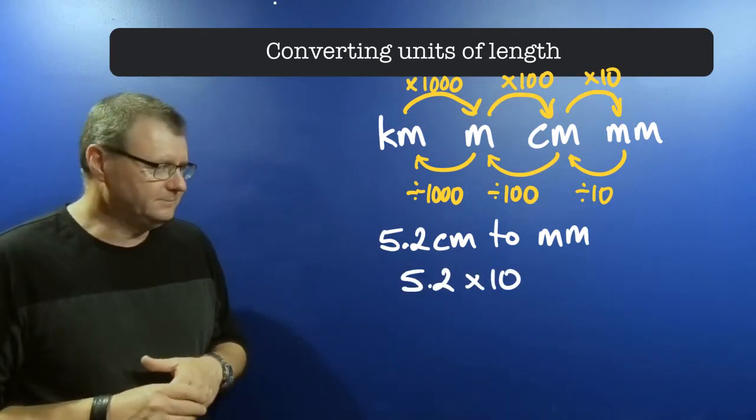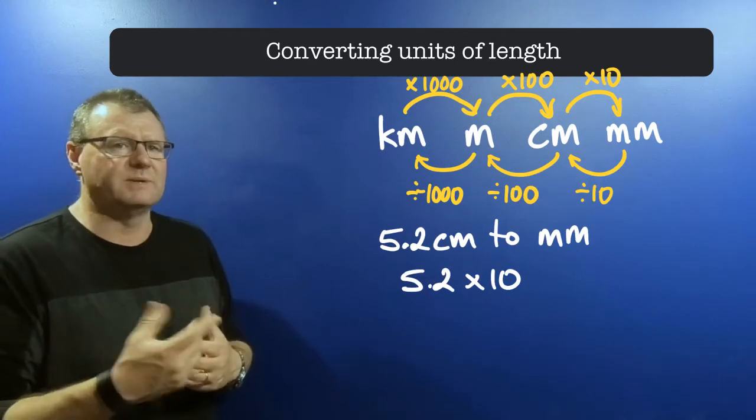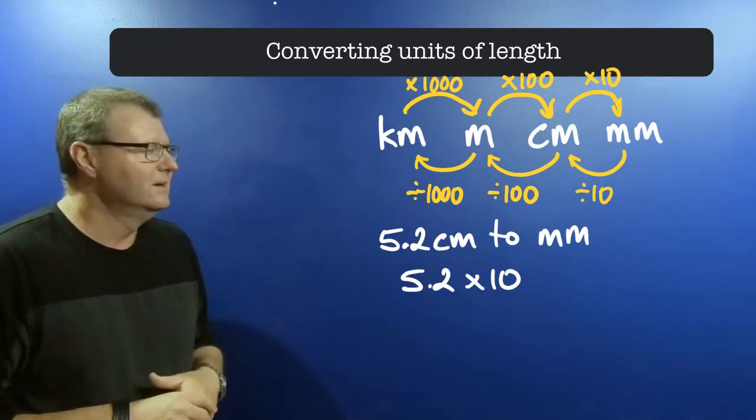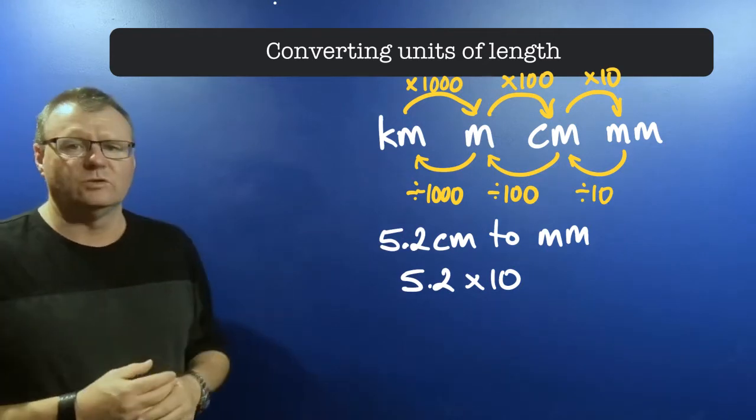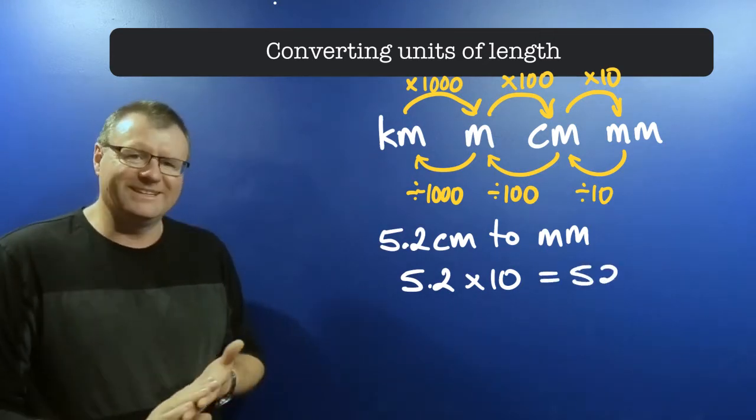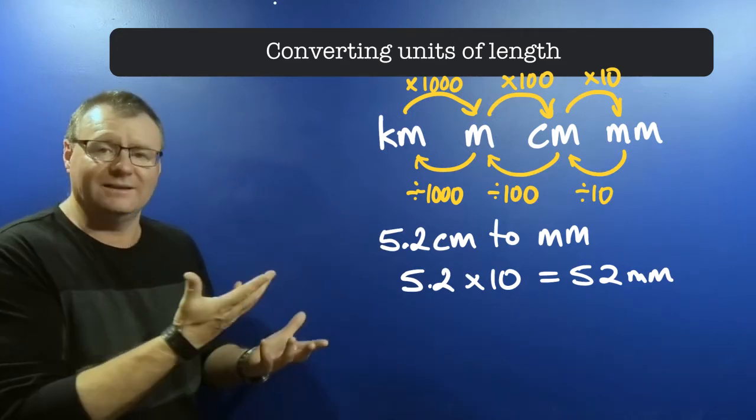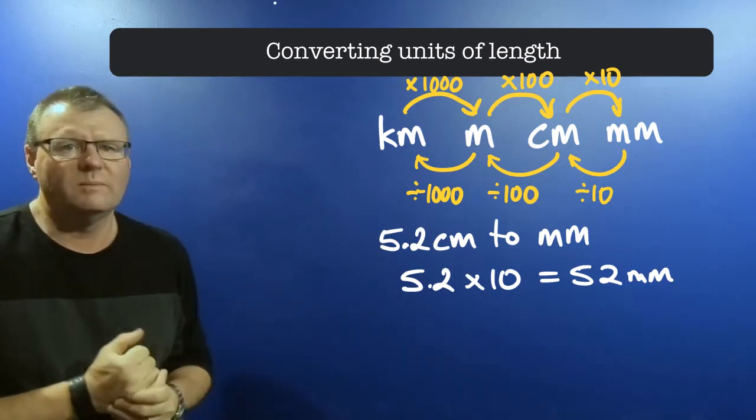I take my 5.2 times it by 10. You can do that in your head or in your calculator. If you're doing it in your head, you're just going to simply add a 0 to the end because that's what times 10 is, and we get 52. So 5.2 centimeters converts to 52 millimeters.